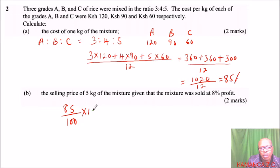You can say this is the same as 85 times 1.08 and that gives 91.80, and you multiply by 5. You can use your calculator and you'll get 459. So that will be the cost of 5 kg of the mixture when sold at a profit of 8%.